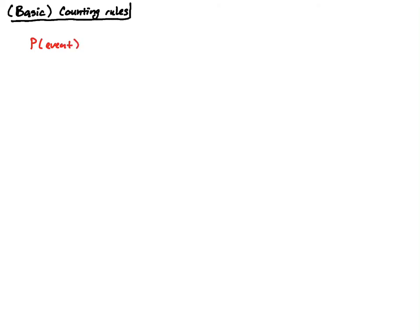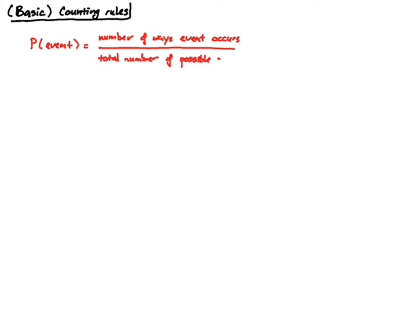In this video we're going to be talking about some basic counting rules in probability. Remember that the probability of an event can be computed by taking the number of ways the event occurs divided by the total number of outcomes. This formula tells us that we need to be able to count in order to do probability.